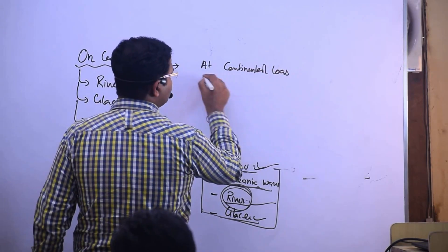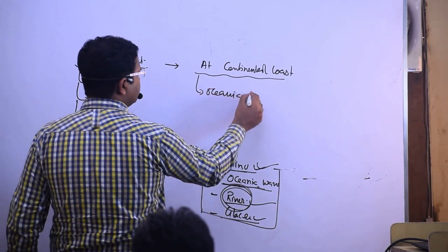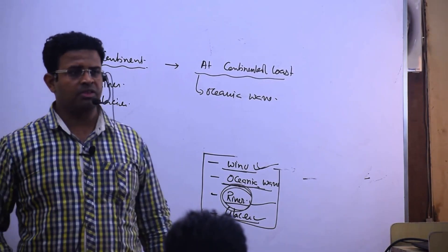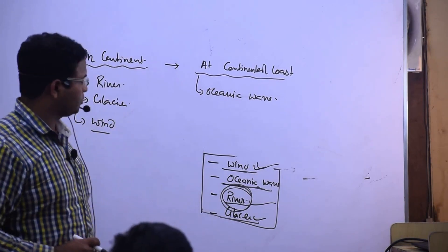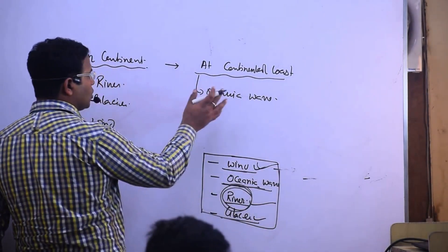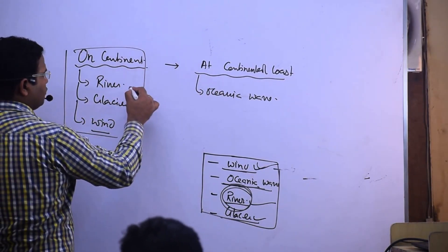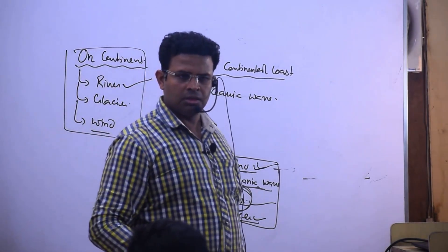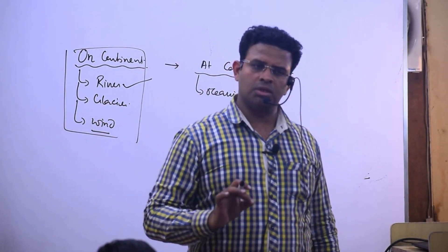At the continental coast, the force is oceanic wave. So here we have erosional forces — at the continental coast it is oceanic wave, and in the continent it is river, glacier, and wind. River is the most important erosional force on the continent.